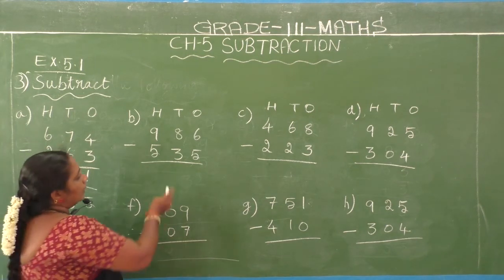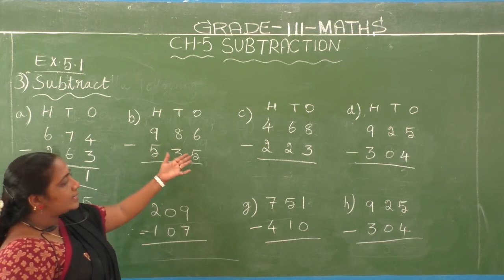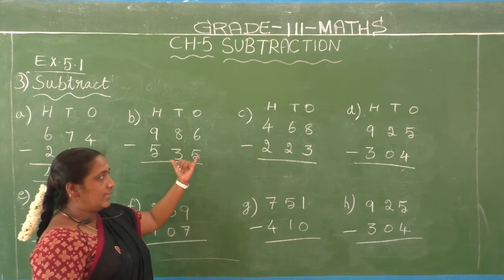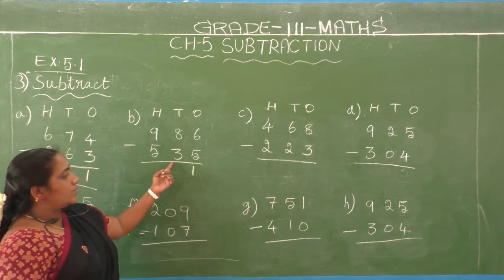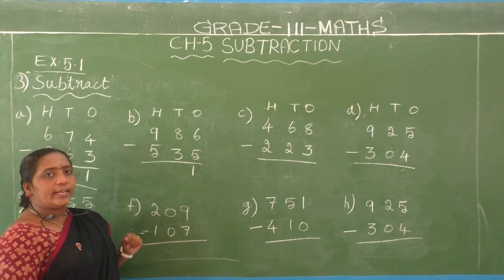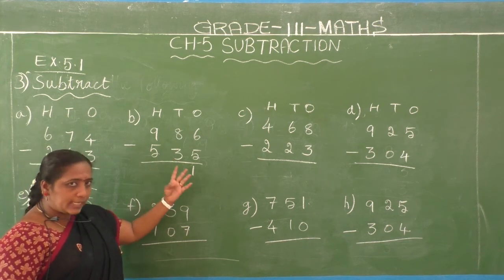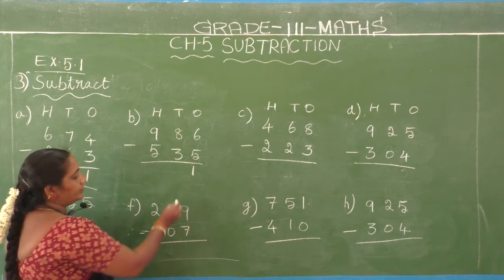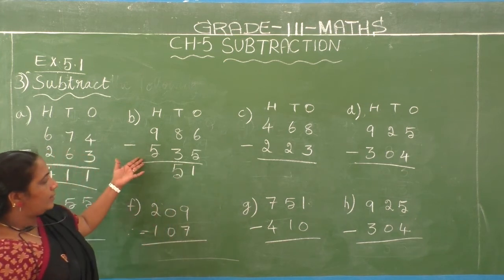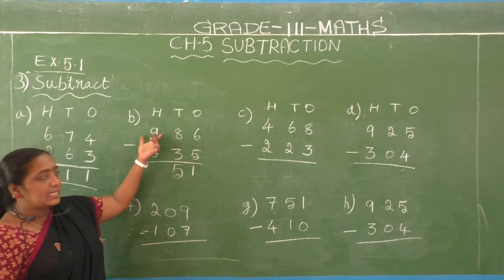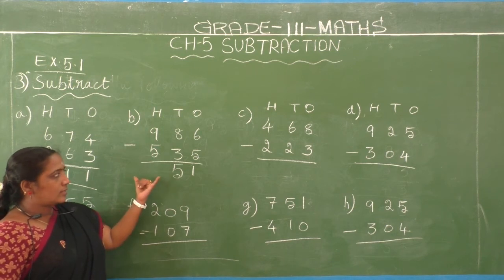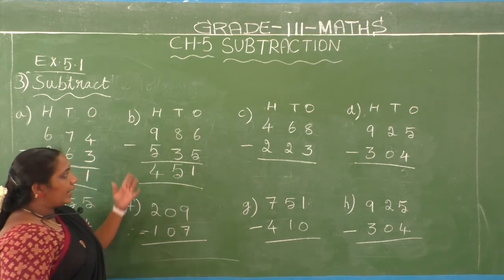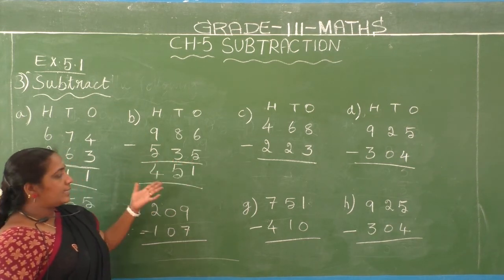B1: 986 minus 535. Ones place — second number 5, first number 6: 5 after 6. Difference is 1. Tens place — second number 3, first number 8: 3 after 4, 5, 6, 7, 8. Difference is 5. Hundreds place — second number 5, first number 9: 5 after 6, 7, 8, 9. Difference is 4. So 986 minus 535 equals 451.